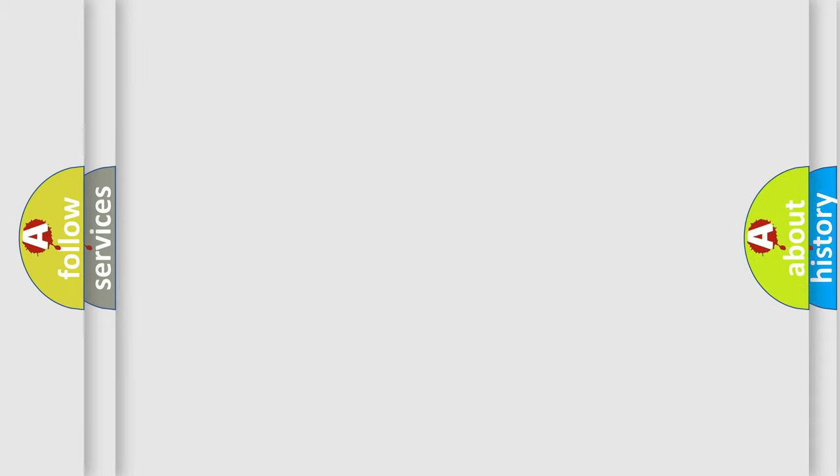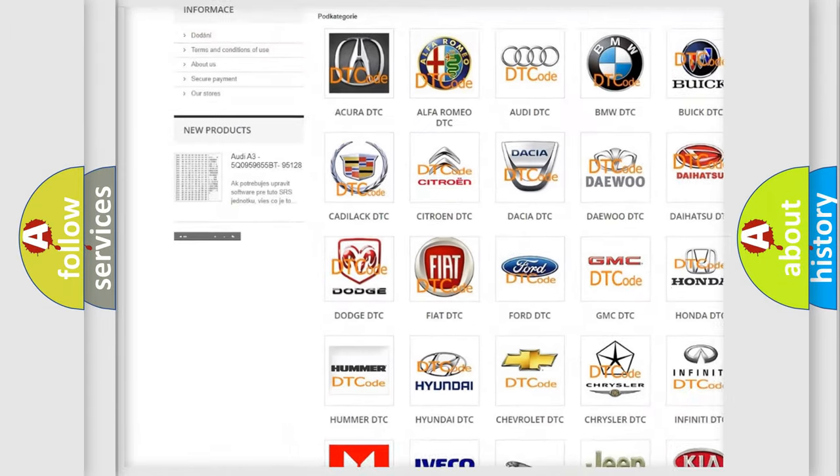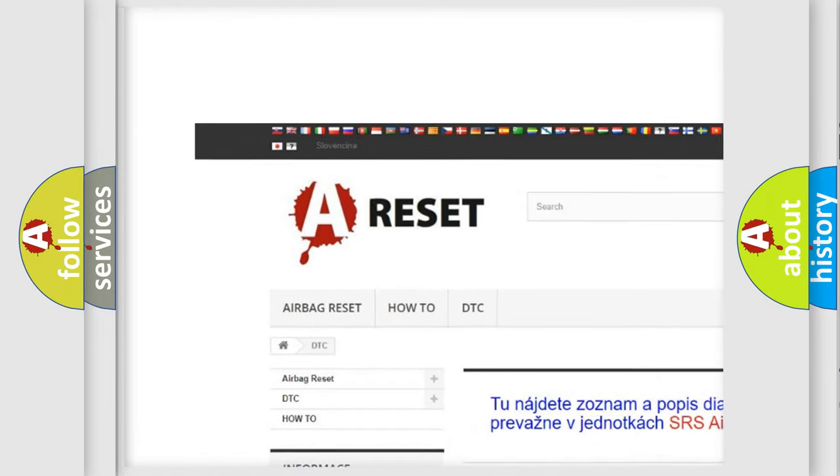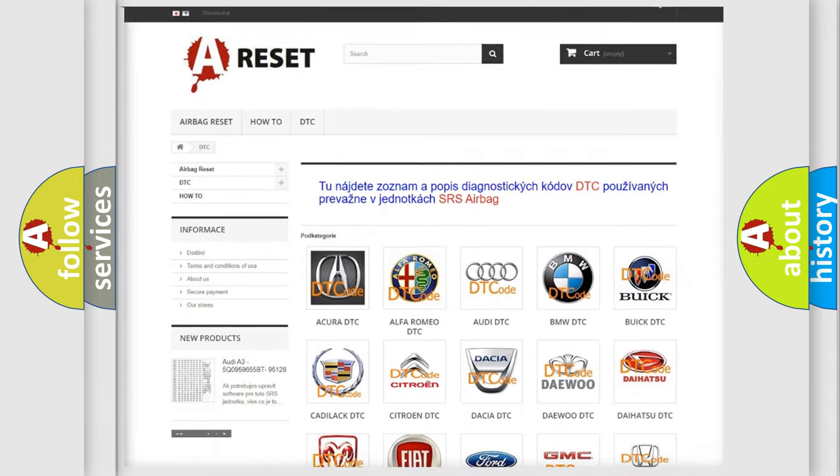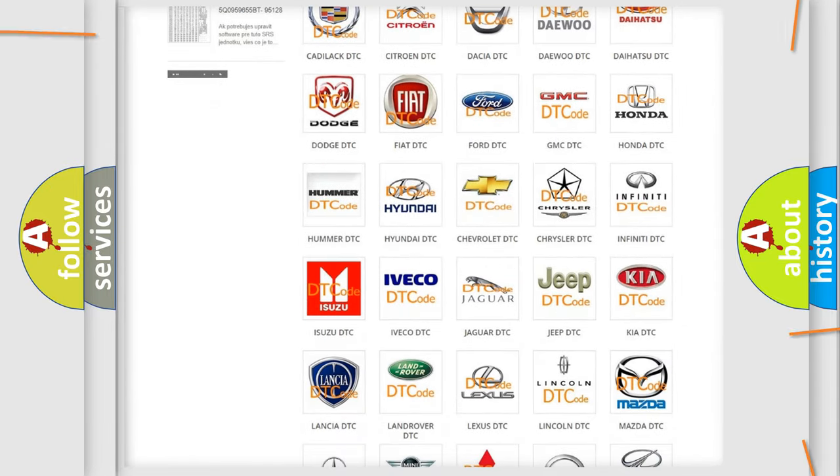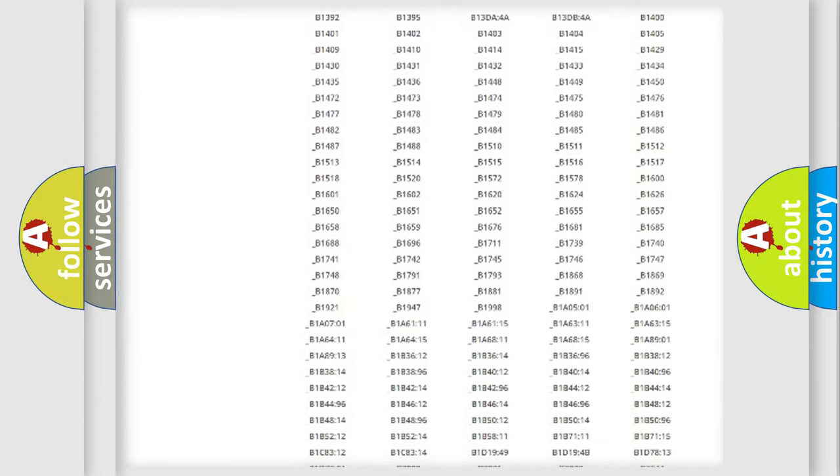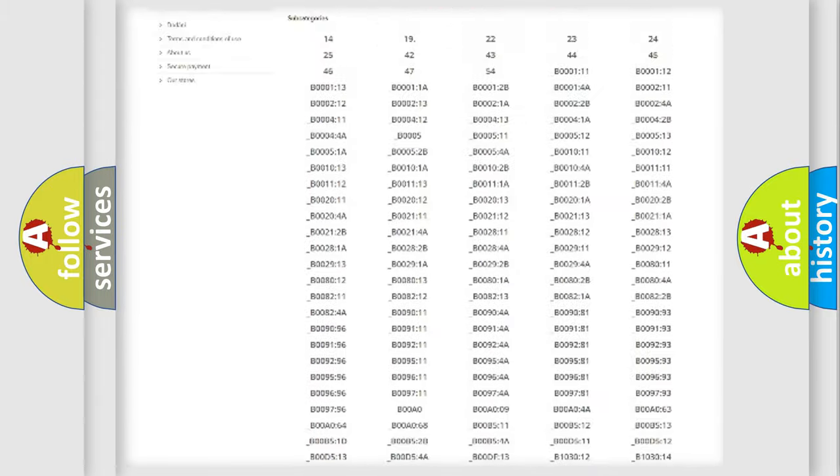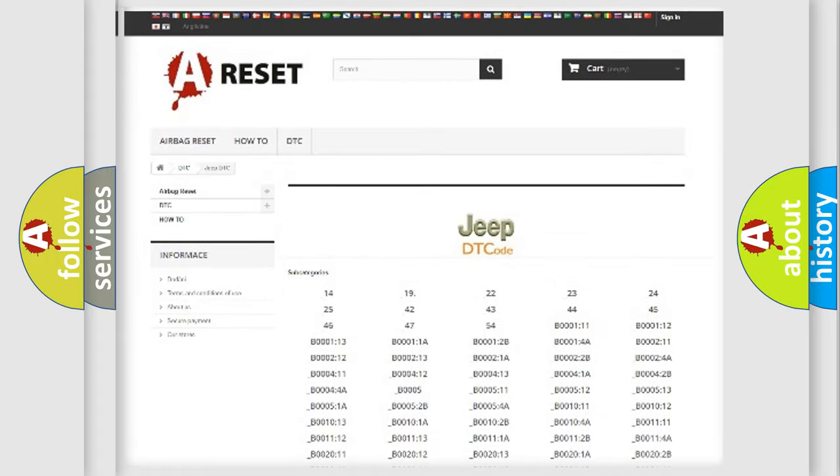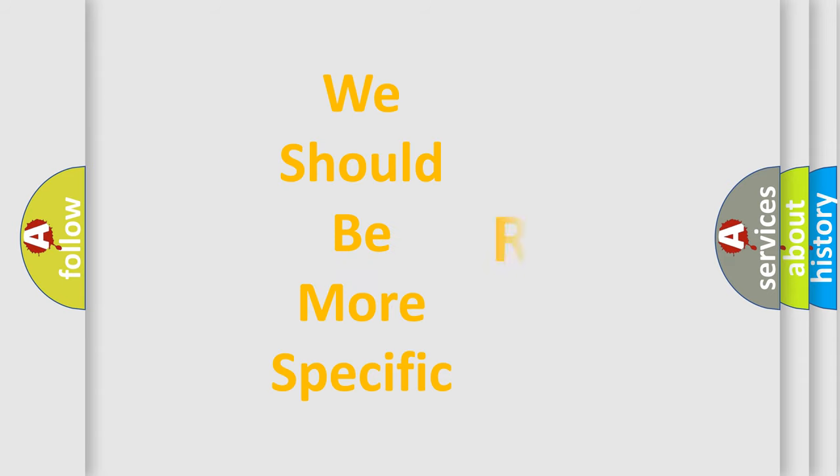Our website airbagreset.sk produces useful videos for you. You do not have to go through the OBD2 protocol anymore to know how to troubleshoot any car breakdown. You will find all the diagnostic codes that can be diagnosed in Jeep vehicles, and many other useful things. The following demonstration will help you look into the world of software for car control units.